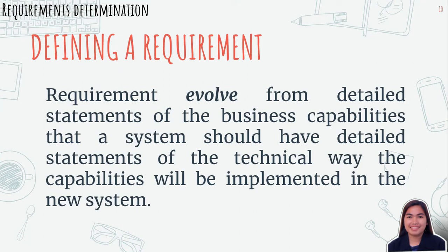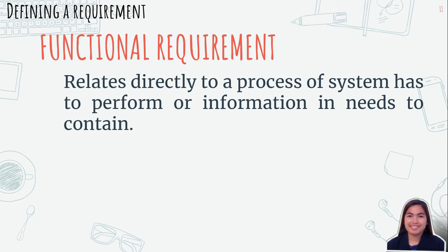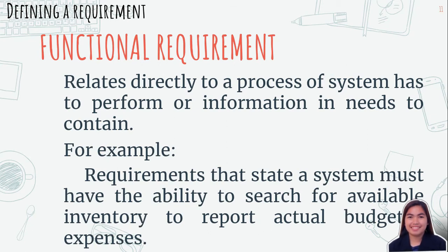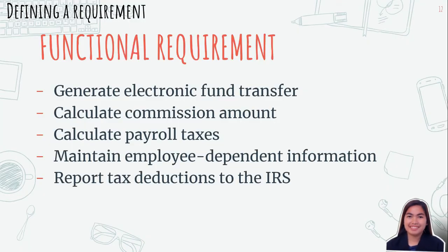Requirements evolve from detailed statements of the business capabilities that a system should have to detailed statements of how those capabilities will be implemented in the new system. Requirements can be either functional or non-functional. Functional requirements relate directly to a process a system has to perform or information it needs to contain — for example, the ability to search available inventory or report actual budgeted expenses. For a payroll system, required business functions might include generate electronic fund transfer, calculate commission amount, calculate payroll taxes, maintain employee dependent information, and report tax deductions to the IRS.